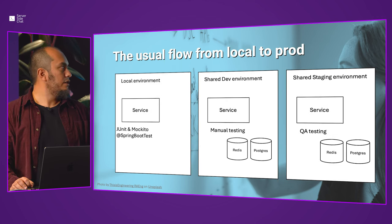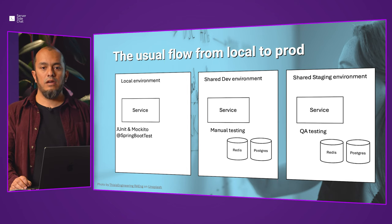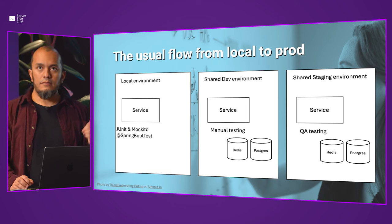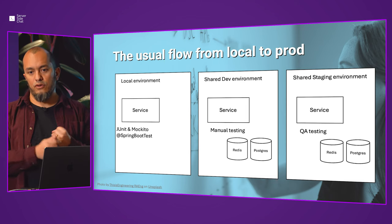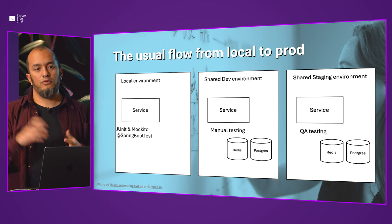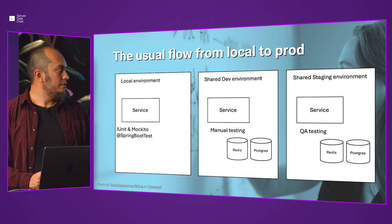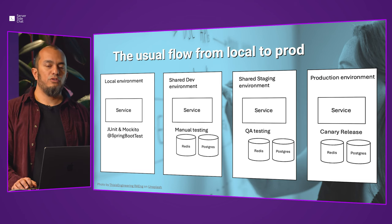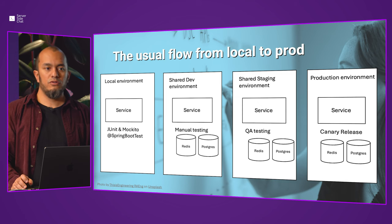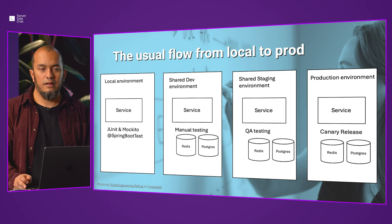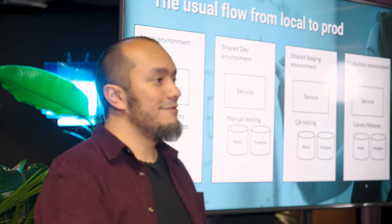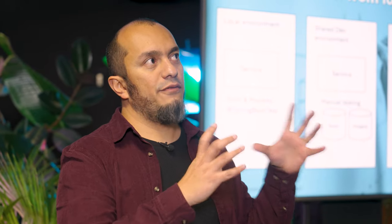After that, you deploy your application to the shared dev environment — an environment in your company where a lot of teams deploy their applications. Some companies deploy while the pull request is still open, others only after it's approved. There you can do some exploratory tests, call the API to see if the results are what you expect. The database is running with test data there.